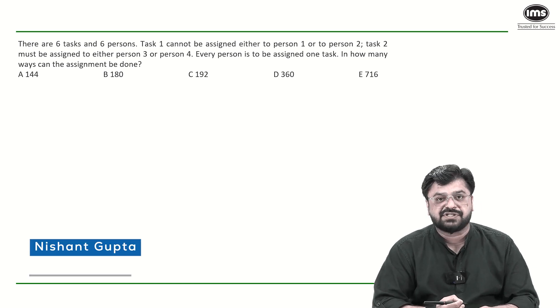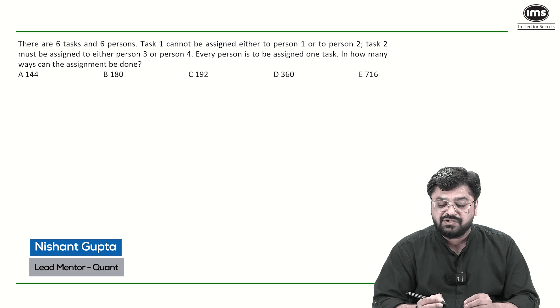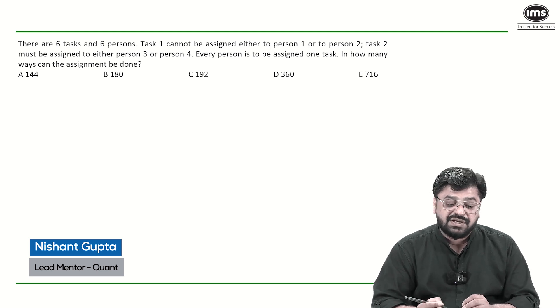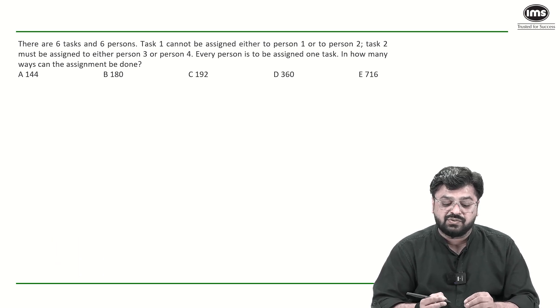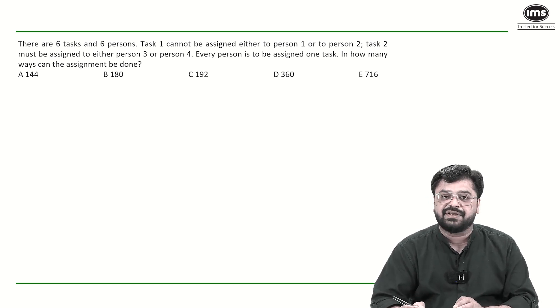There are 6 tasks and 6 persons. Task 1 cannot be assigned either to person 1 or person 2. Task 2 must be assigned to either person 3 or person 4. Every person is to be assigned one task. In how many ways can the assignment be done?